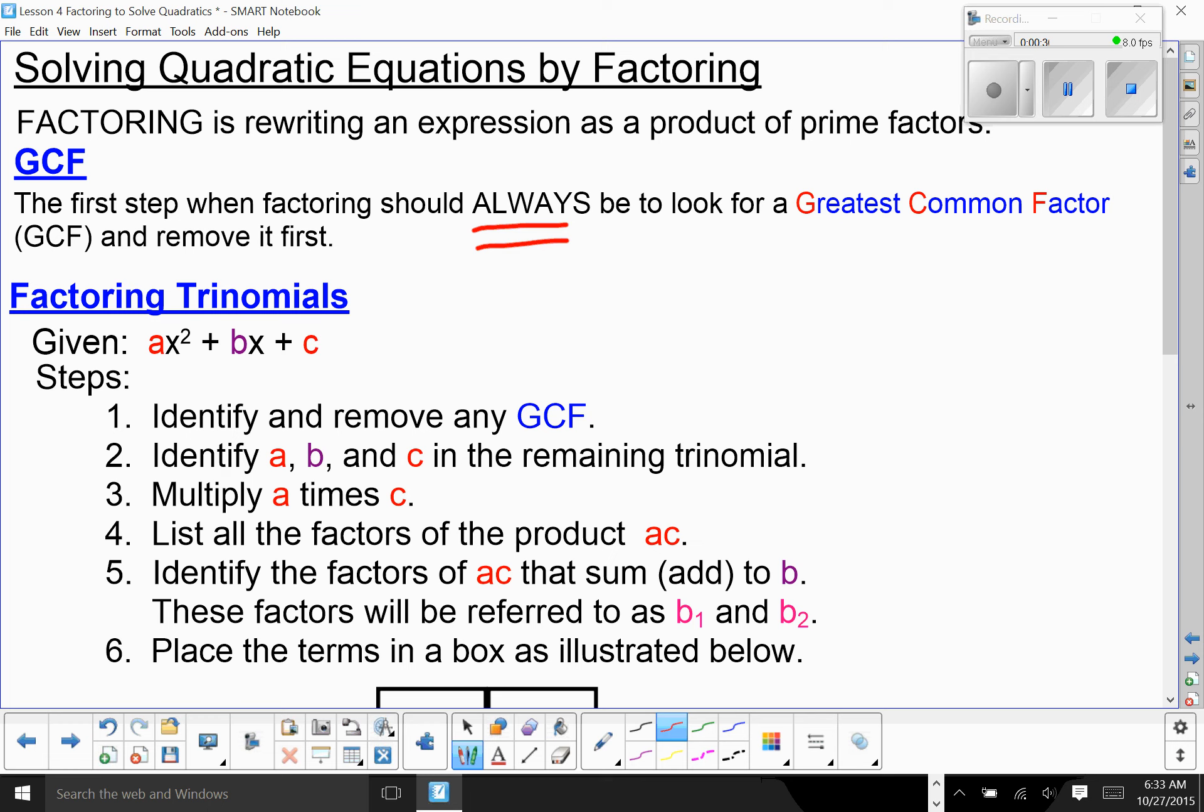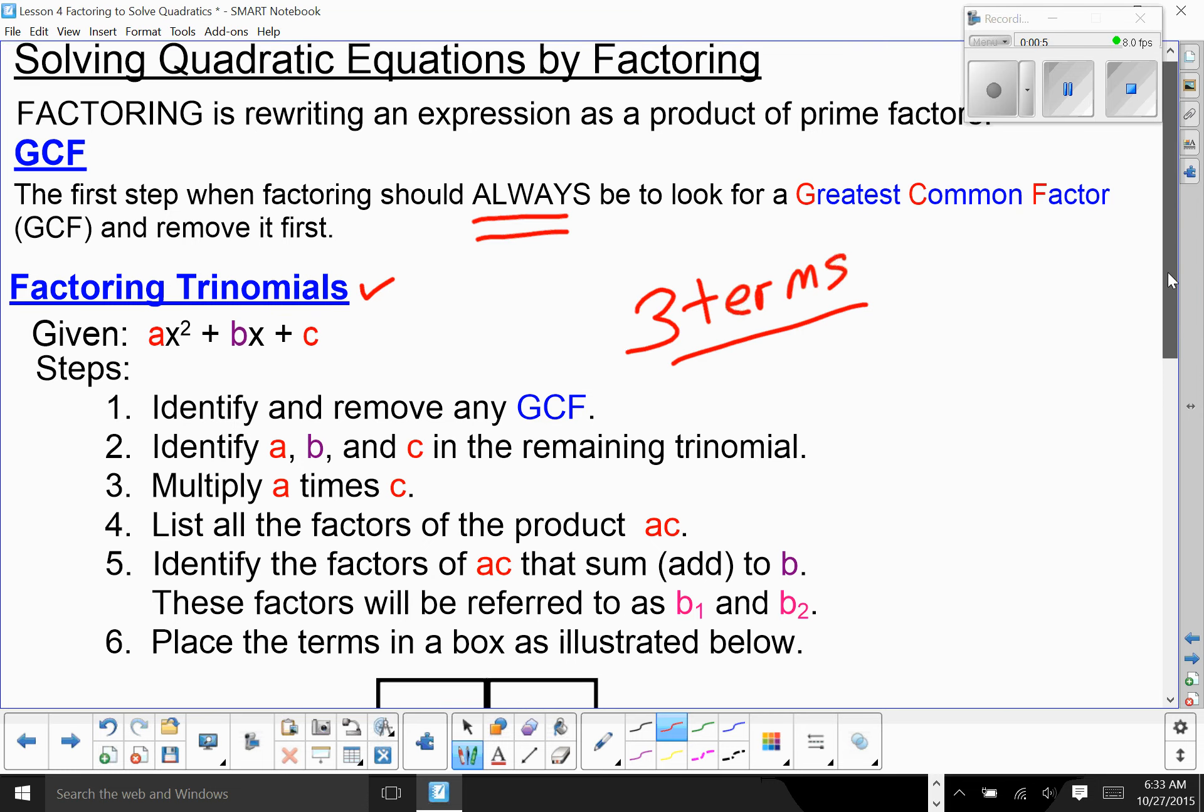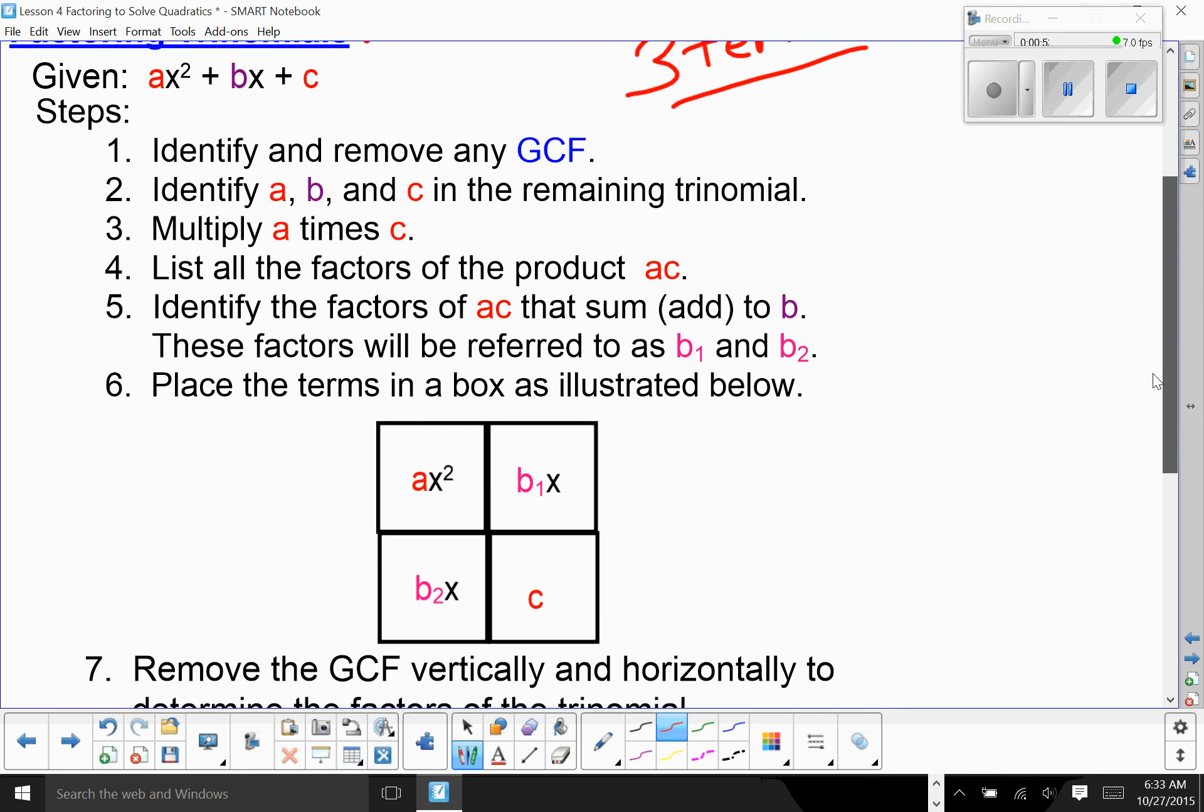Then, if you have three terms, three terms is a trinomial, so you're going to look at factoring a trinomial. You should have identified and removed the greatest common factor first. Identify, at least visually, your A, B, and C. Multiply A times C.